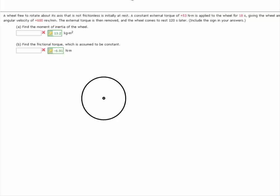This is Dr. Holt. This is one of the webassign problems I want to go over. Here we have a wheel free to rotate about its axis that is not frictionless, and that's important, is initially at rest. A constant external torque of 53 Nm is applied to the wheel for 18 seconds, giving the wheel an angular velocity of 600 rpm.